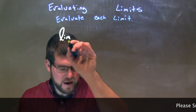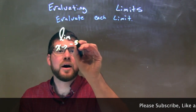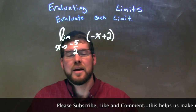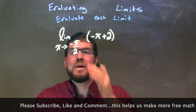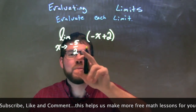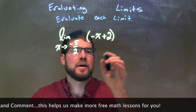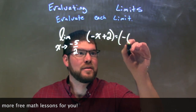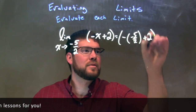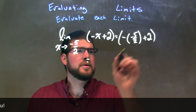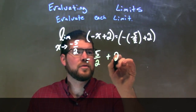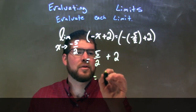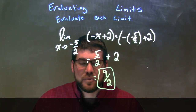The limit as x approaches negative 5 halves of negative x plus 2. Since this is just a polynomial, and a polynomial is continuous everywhere, we can take the limit at any value by directly substituting. So this is going to equal negative negative 5 halves plus 2. A negative times a negative is a positive, so we have positive 5 halves plus 2, which is 4 halves. 4 halves plus 5 halves is 9 halves. Our limit is equal to 9 halves.